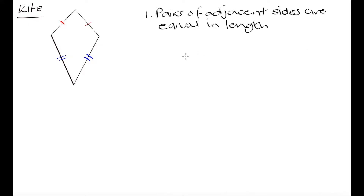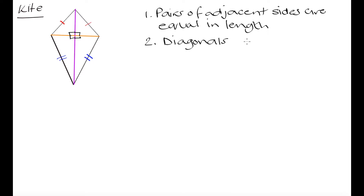The second property of the kite family is that the diagonals of the kite are perpendicular. If we put in our two diagonals — that will be our first diagonal and this is going to be our second diagonal — in a kite these diagonals are going to be perpendicular to one another, meaning we create four 90-degree angles. So the diagonals are perpendicular.